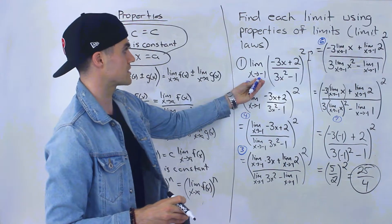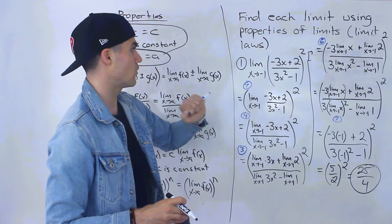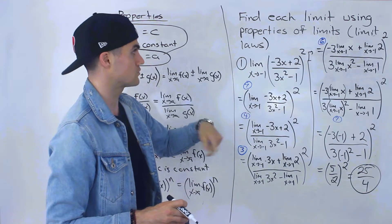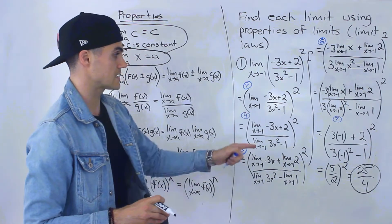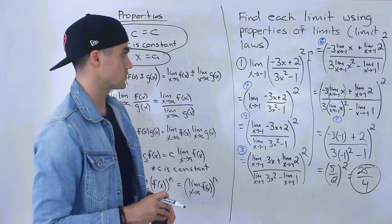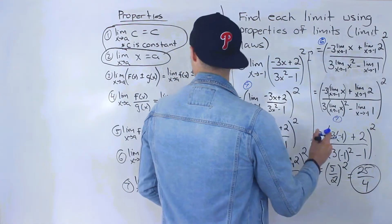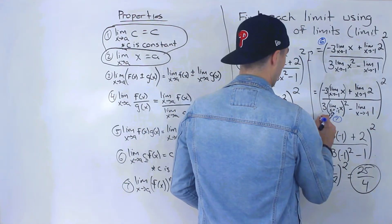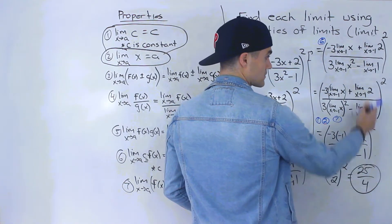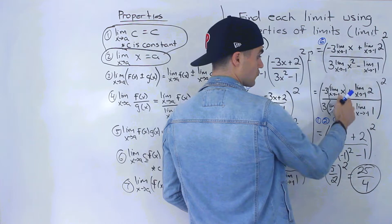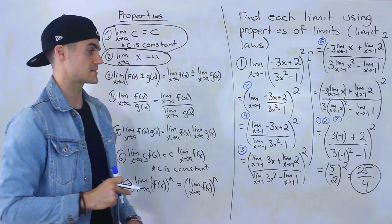You can verify by direct substitution and you'd get five over two squared, which is 25 over four — correct. From the substitution step, we used law number one for the constants and law number two for the x terms. So 25 over four is the answer for number one.